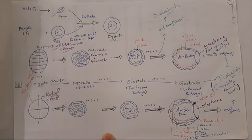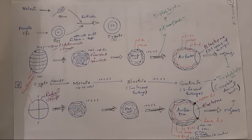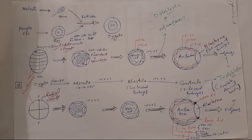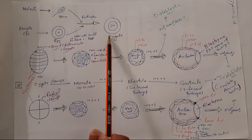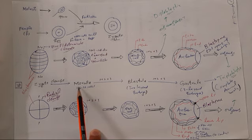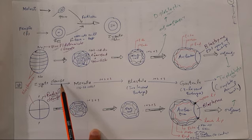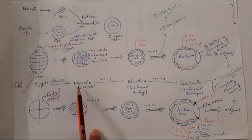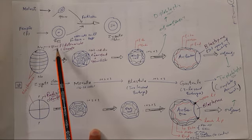Please note the definition of cleavage: the early rapid mitotic divisions of the zygote resulting in the formation of a multicellular organism is called cleavage. The zygote is a single unicellular structure, but after cleavage it forms 16 to 32 cells and becomes a multicellular embryo. There are two types of cleavage: spiral cleavage and radial cleavage.